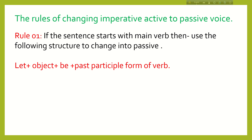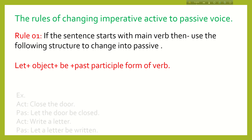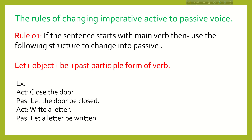Rule 1: If the sentence starts with the main verb, you have to use the following structure to change it into passive voice: Let + object + be + past participle form of verb. For example, 'Close the door.' Here, 'close' is the main verb and the sentence starts with it. So you use the structure: Let the door be closed.